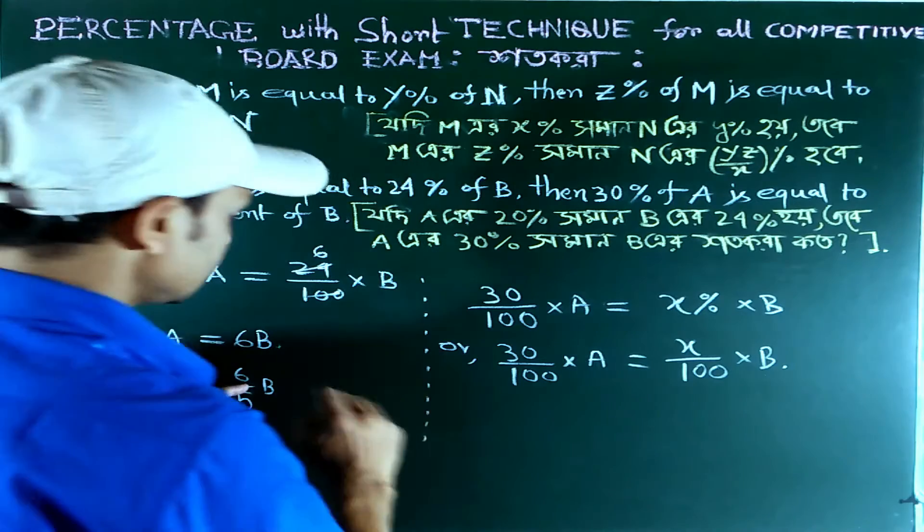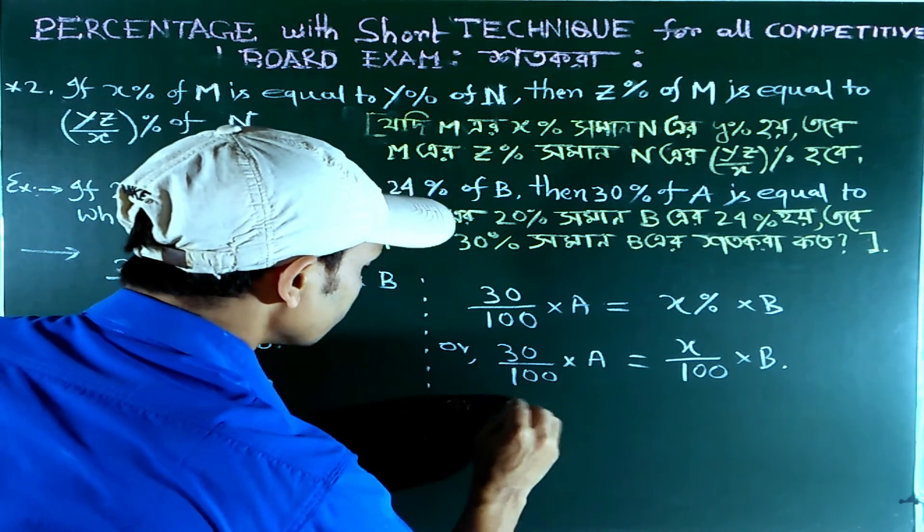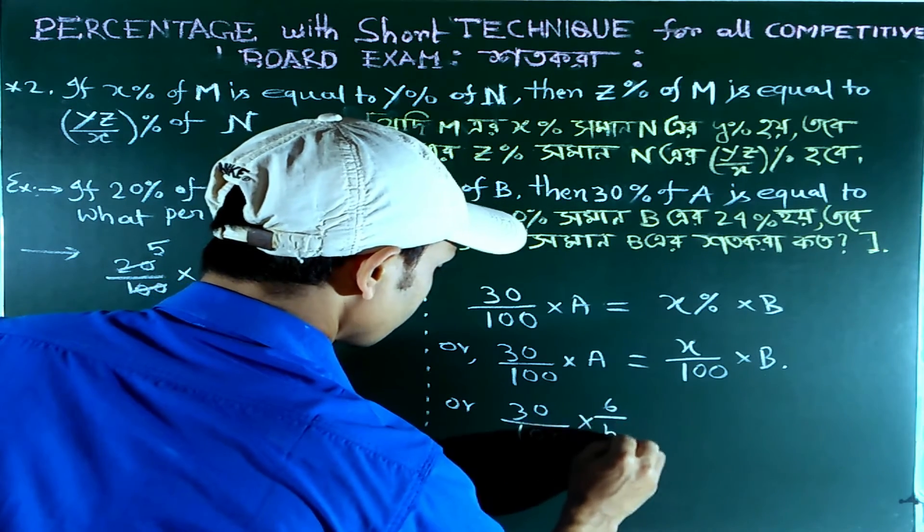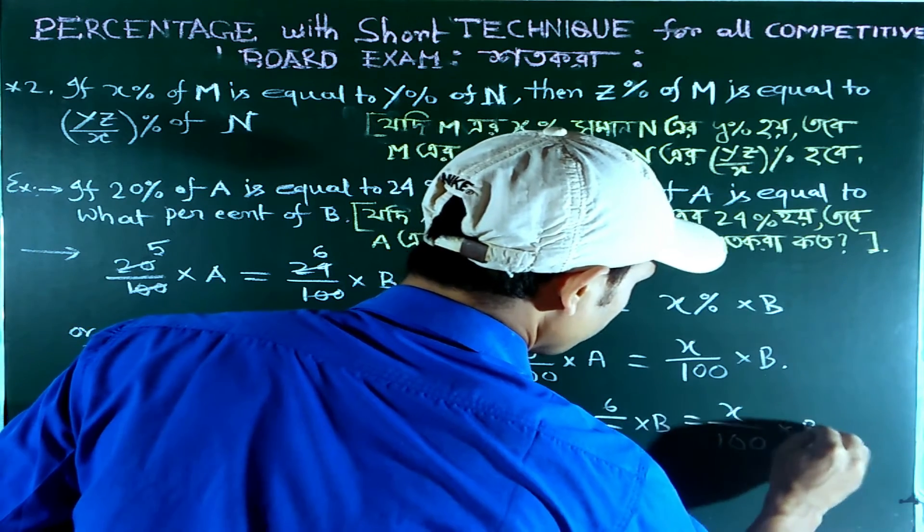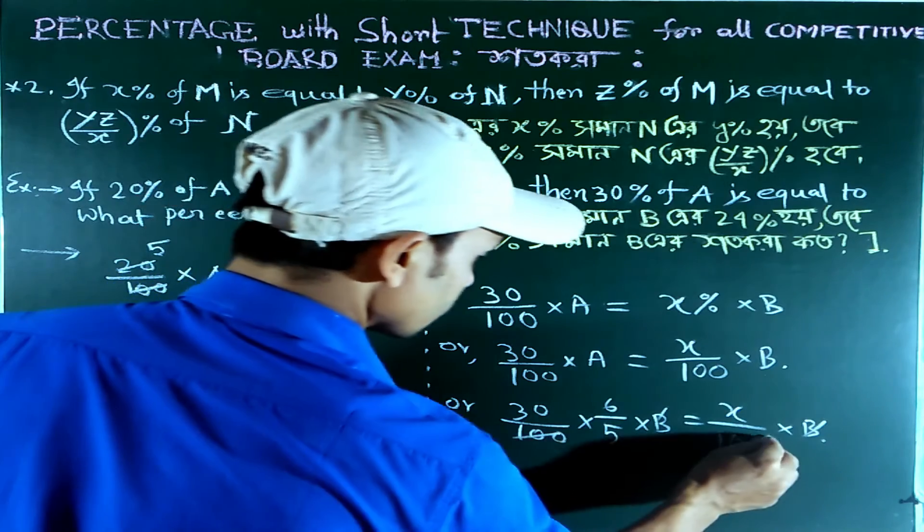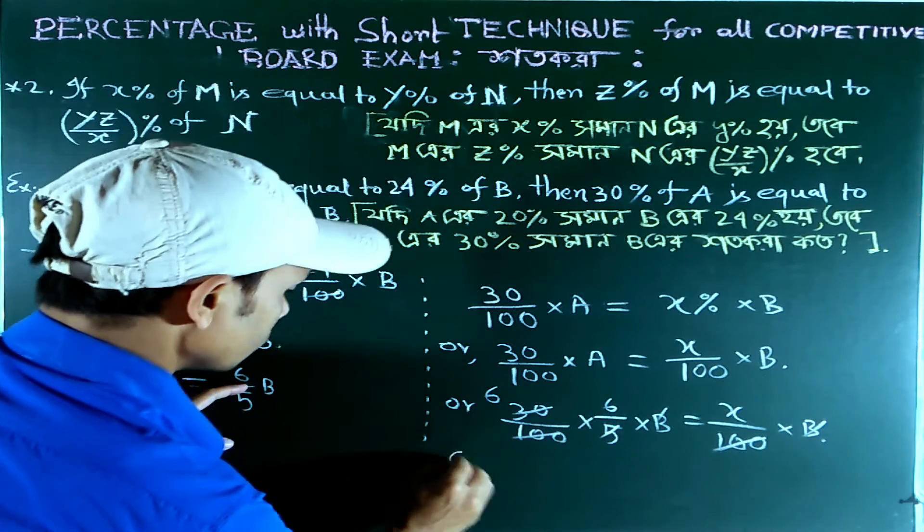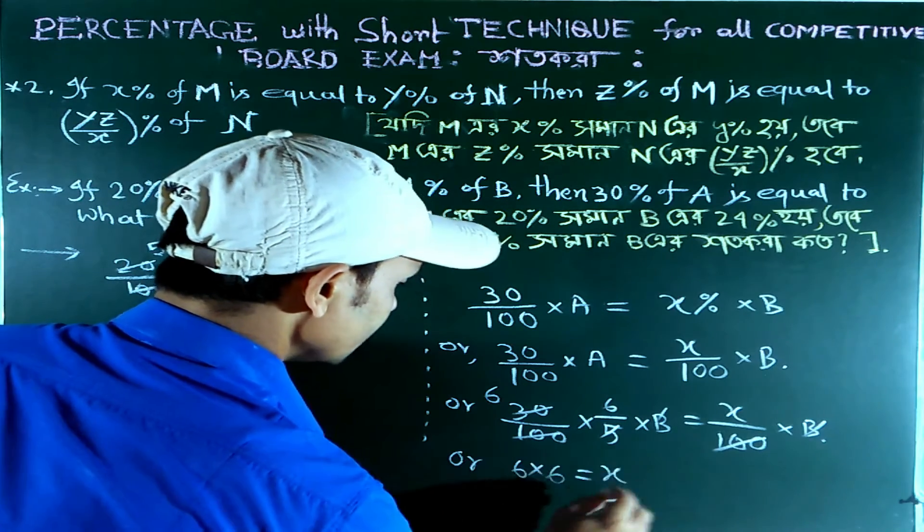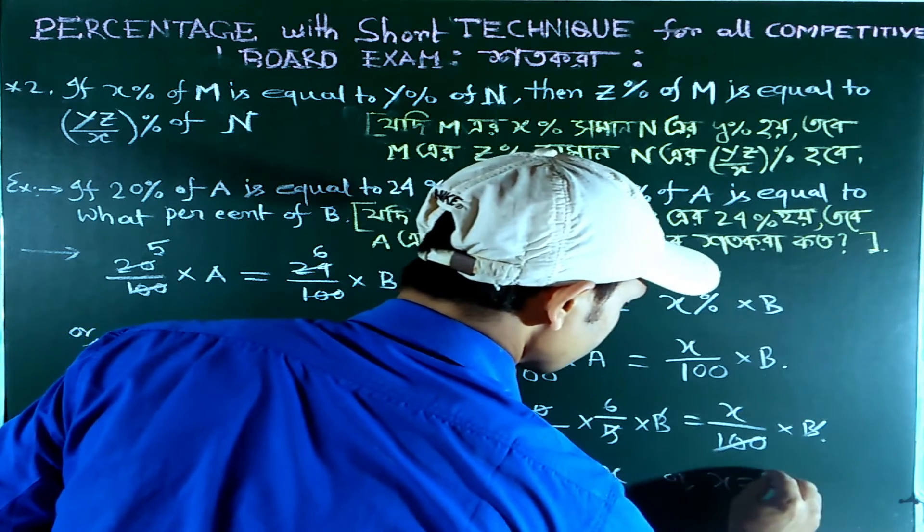If we put the value of A, we get 30 upon 100 multiplied by 6 upon 5 multiplied by B equals to X upon 100 multiplied by B. After cancellation of B and 100 on both sides, 6 multiplied by 6 equals to X, so X equals to 36.